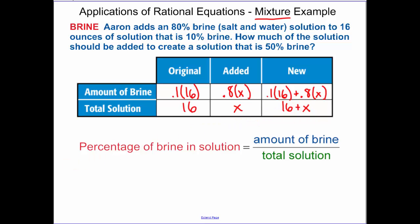Now the key here is to do percentage of brine in solution equaling the amount of brine over the total solution. We want our end solution, we want to create a solution that is 50% brine. The amount of brine is 1.6 plus 0.8x, all over the total solution which is 16 plus x.